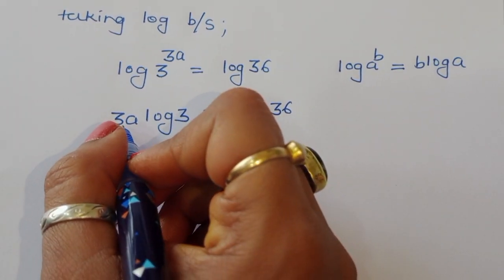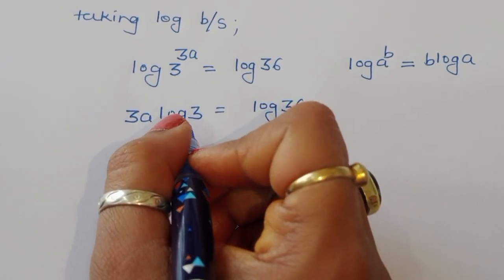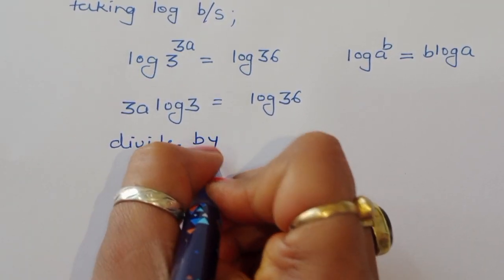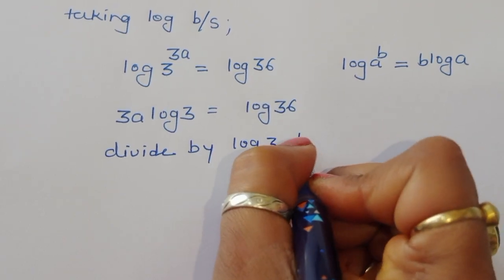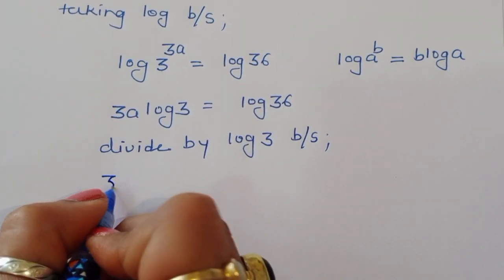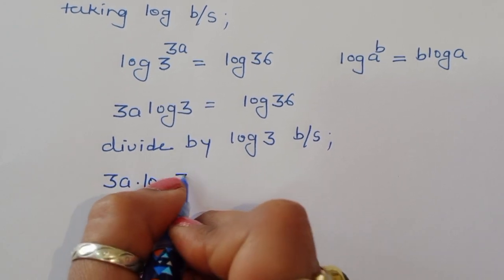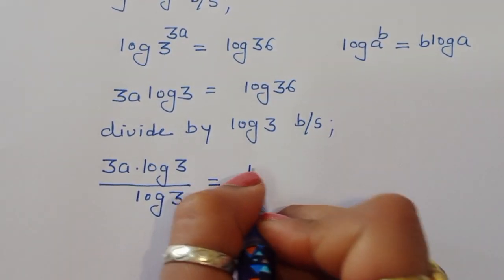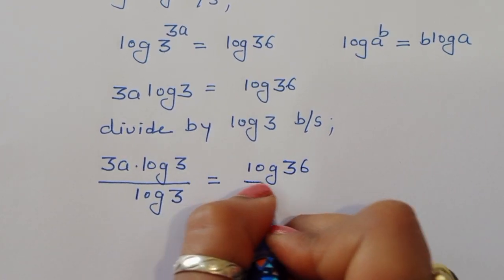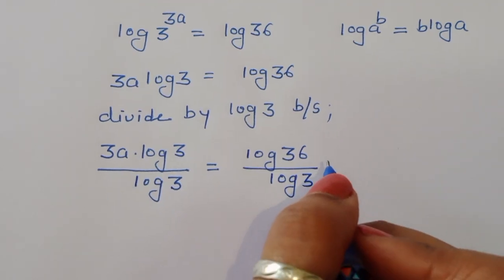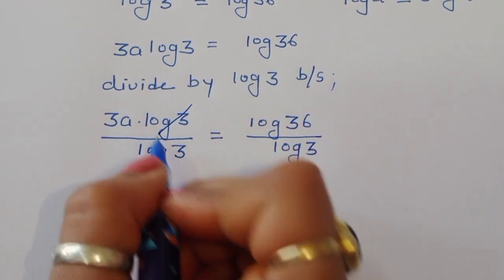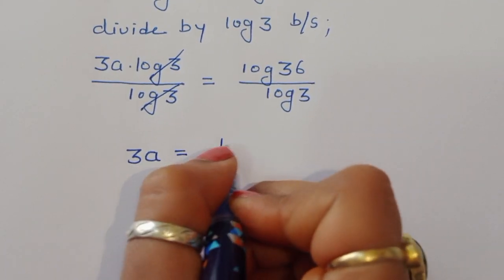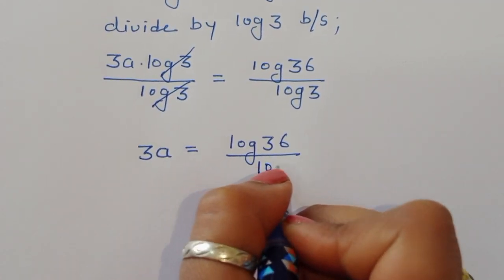Now we have to find out the value of A, so we have to cancel the log 3 term. We divide both sides by log 3: 3A times log of 3 divided by log of 3 equals log of 36 divided by log of 3. The log 3 cancels, leaving 3A is equal to log of 36 divided by log of 3.